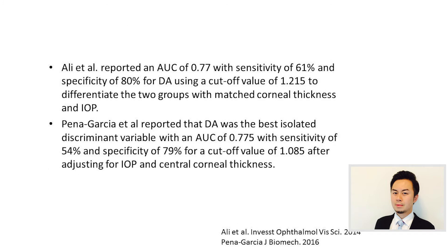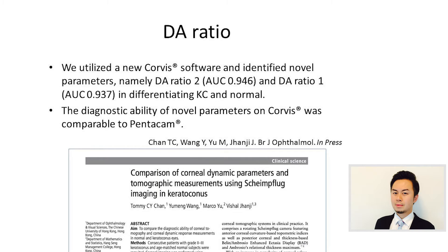It is important to note that the corneal dynamic response is affected by corneal thickness and intraocular pressure. Therefore, studies have tried to match these two confounding factors when calculating the AUC of deflection amplitude in differentiating keratoconus from normal, reporting an AUC of around 0.775. Using a new Corvis software system, we identified novel parameters and found that DA ratio 2 and DA ratio 1 have a very high area under curve for discriminating keratoconus from normal.